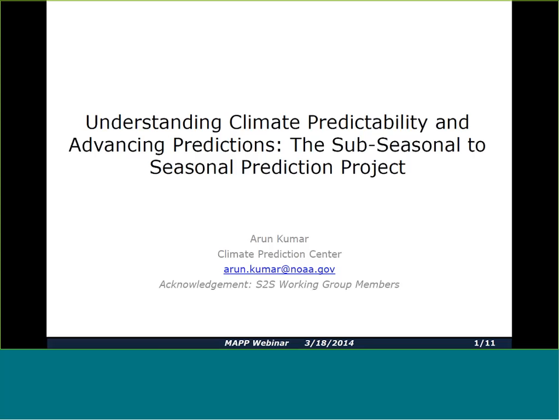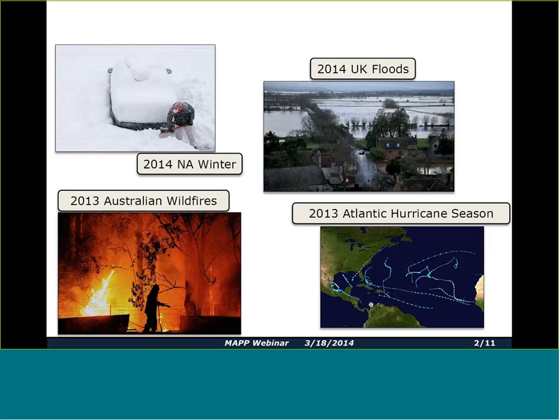The theme of this MAP webinar is on Stranding Climate Predictability and Advancing Predictions by focusing on sub-seasonal to seasonal time scales. As background, there's a lot of climate variability which happens on the sub-seasonal to seasonal time scales. It has both beneficial and adverse impacts.